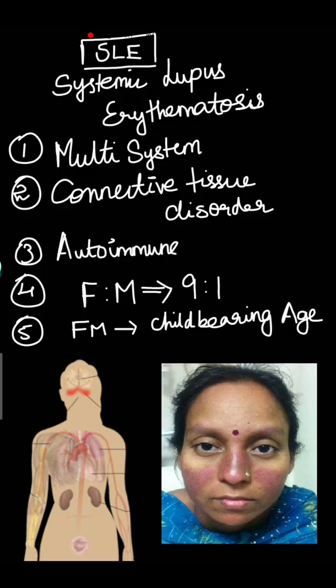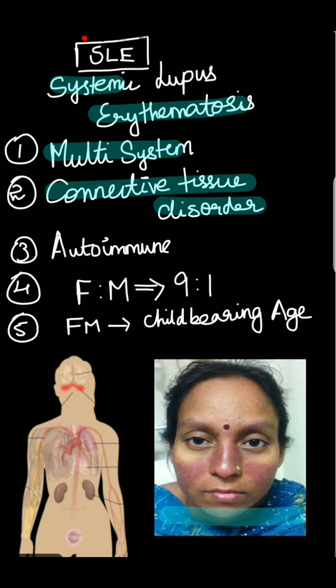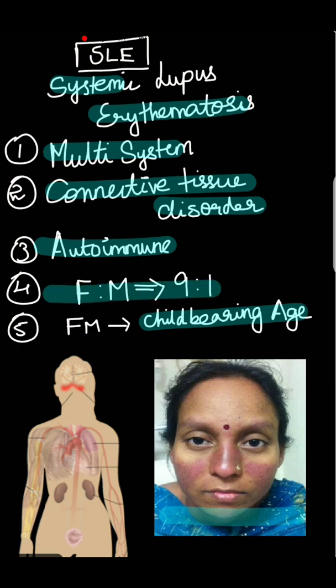Welcome to MABS Tamil. Today we will talk about systemic lupus erythematosus. From the name, 'systemic' refers to multi-system involvement — several organ involvement. 'Erythematosus' relates to skin lesions like erythema. In this image, it is the malar rash typically seen in SLE. It is a connective tissue disorder that is autoimmune in nature. It is more common in females of childbearing age, around 22-30 years, with a female to male ratio of 9 to 1.